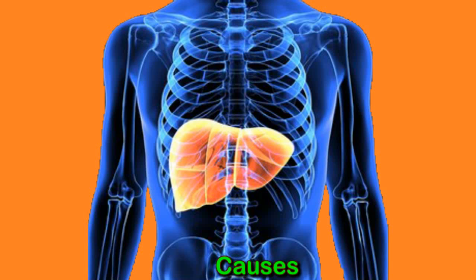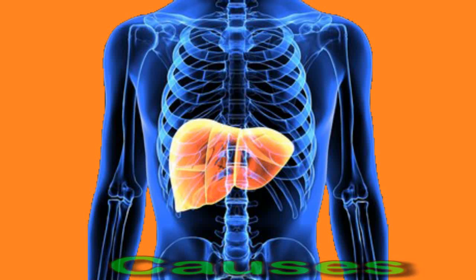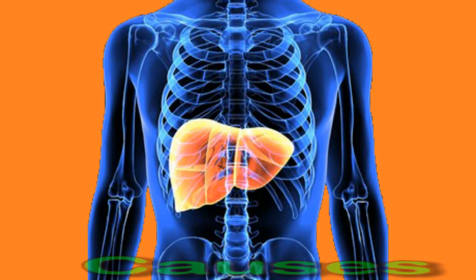If the liver is not working properly, it may be unable to make bilirubin water-soluble, resulting in too much bilirubin building up in the liver. Causes include viruses such as hepatitis A, alcoholic liver disease, some medicine overdoses including acetaminophen, and autoimmunity — a disorder where the immune system attacks the body's own cells. Once the bilirubin has left the liver, levels may be high because bilirubin is unable to leave the body, possibly due to a blockage such as gallstones in the gallbladder. This is called the post-hepatic phase.